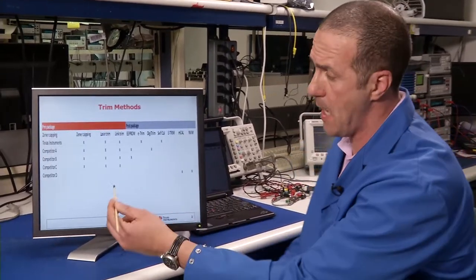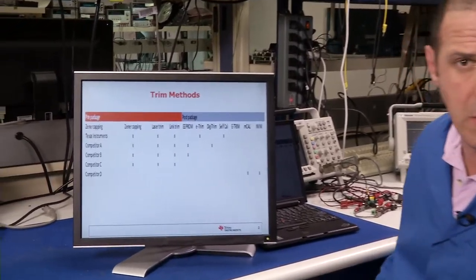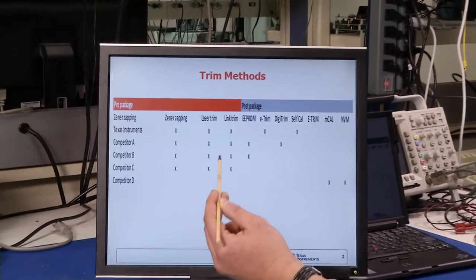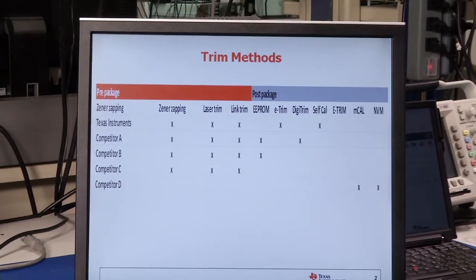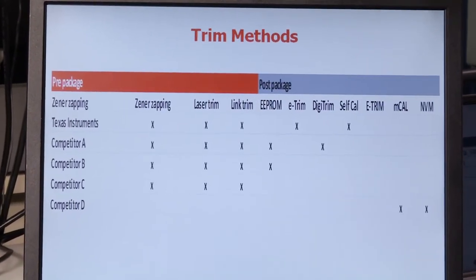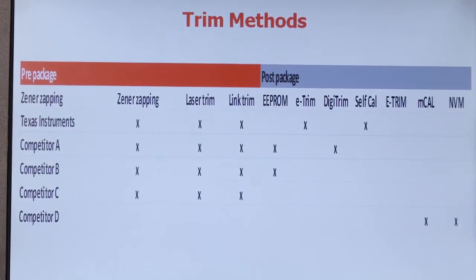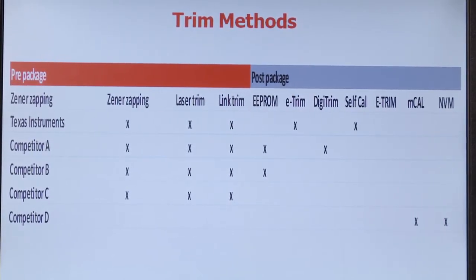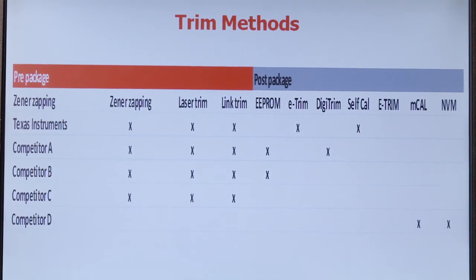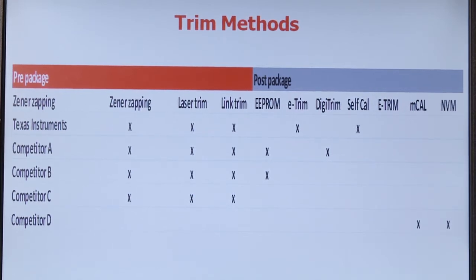Again, going back to the various trim methodologies, we mentioned zeno-zapping. That's probably one of the oldest one that's been around for the better part of 50 years. Laser trimming, link trimming, double EEPROM, which is usually not so much for stand-alone IC devices, but really on a subsystem or system-on-chip type of packages. And then e-trim, which the OPA376 is built on, some of our competitive trim methodologies, etc. So ultimately, it basically comes down to the user to look at the data sheet and determine which one is the better one for a given application.